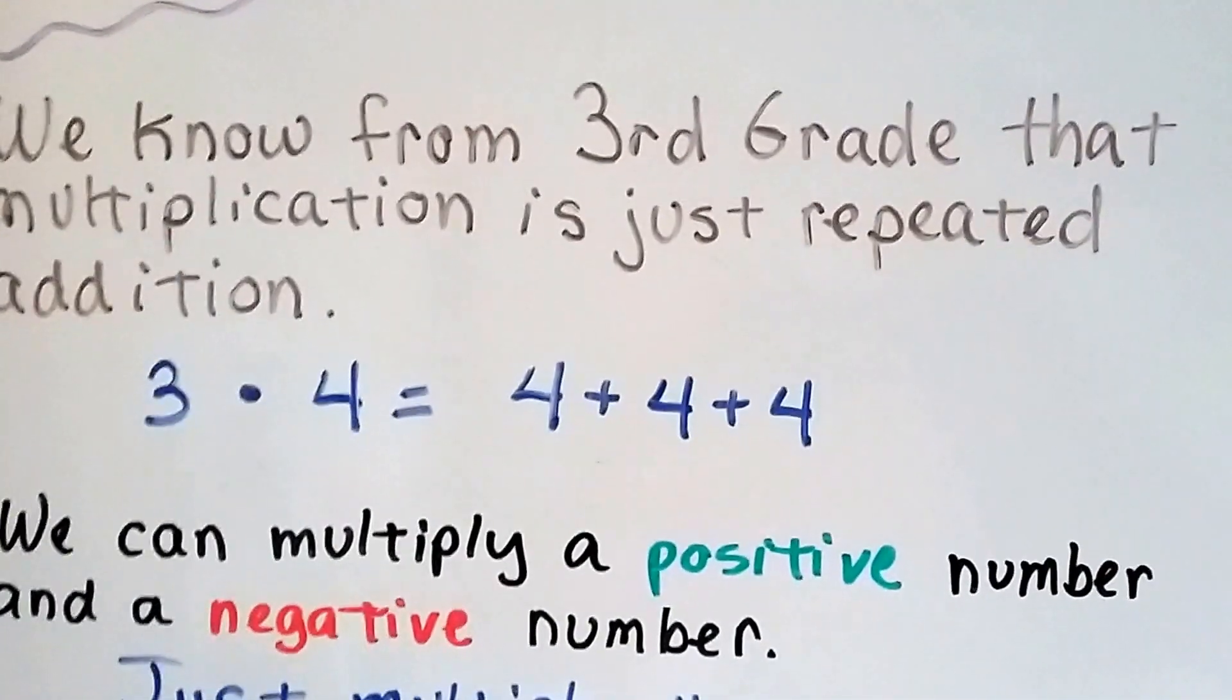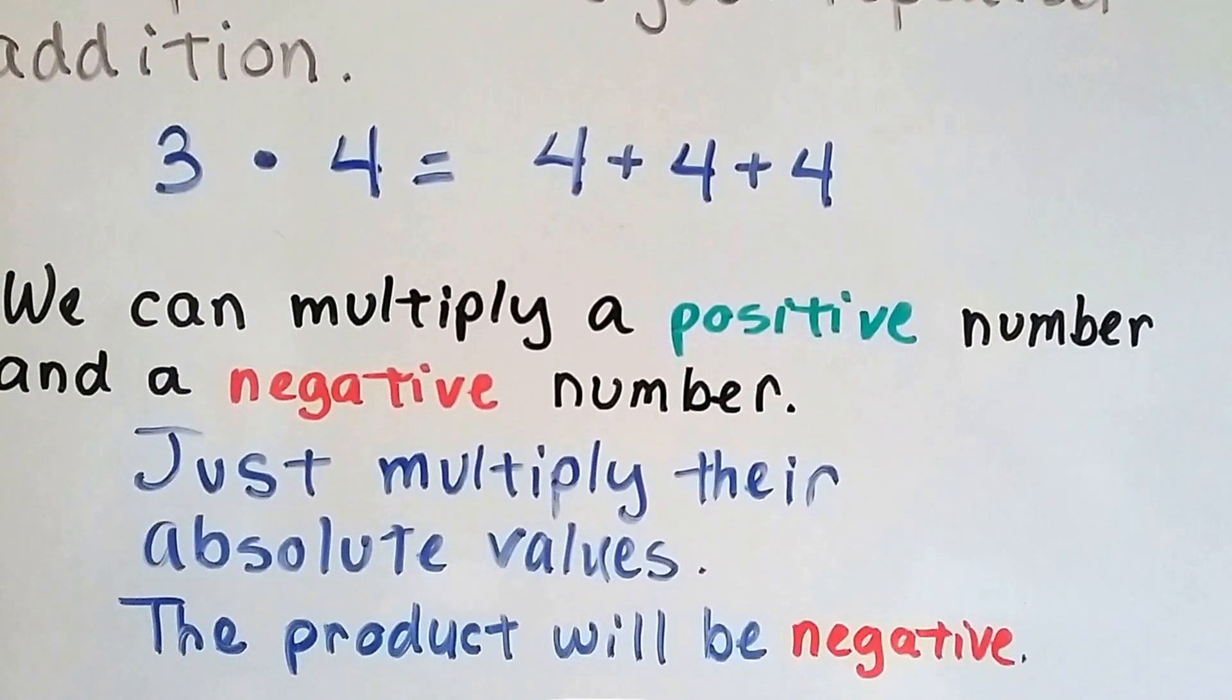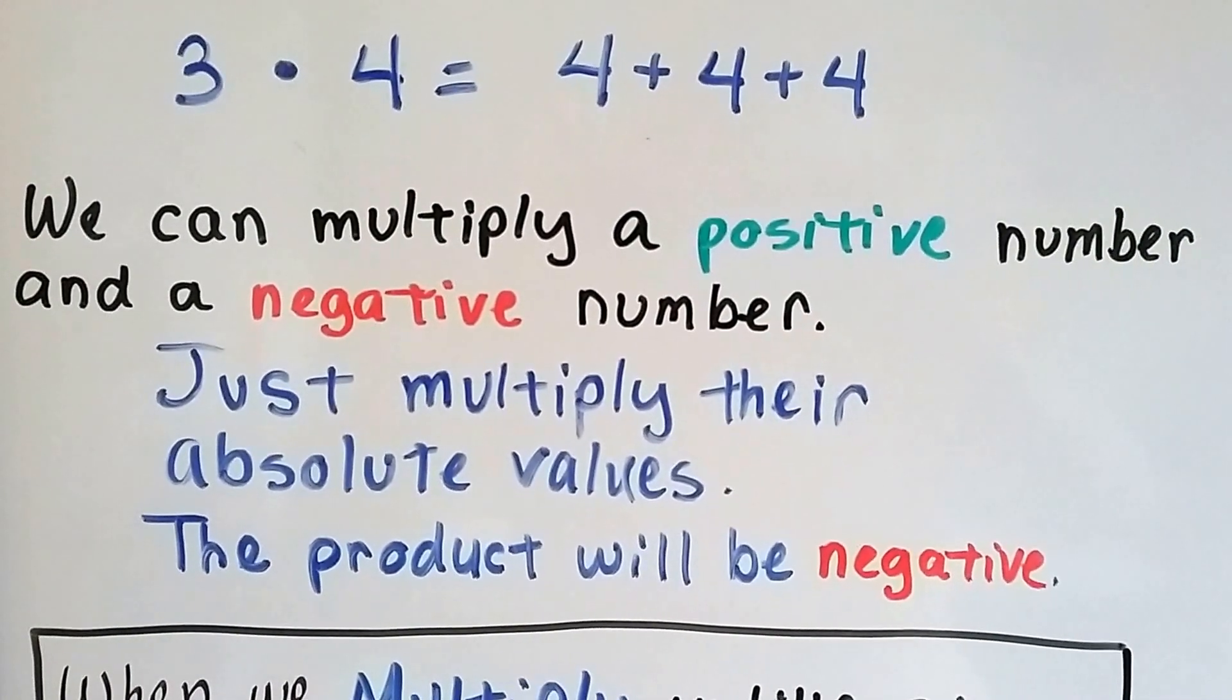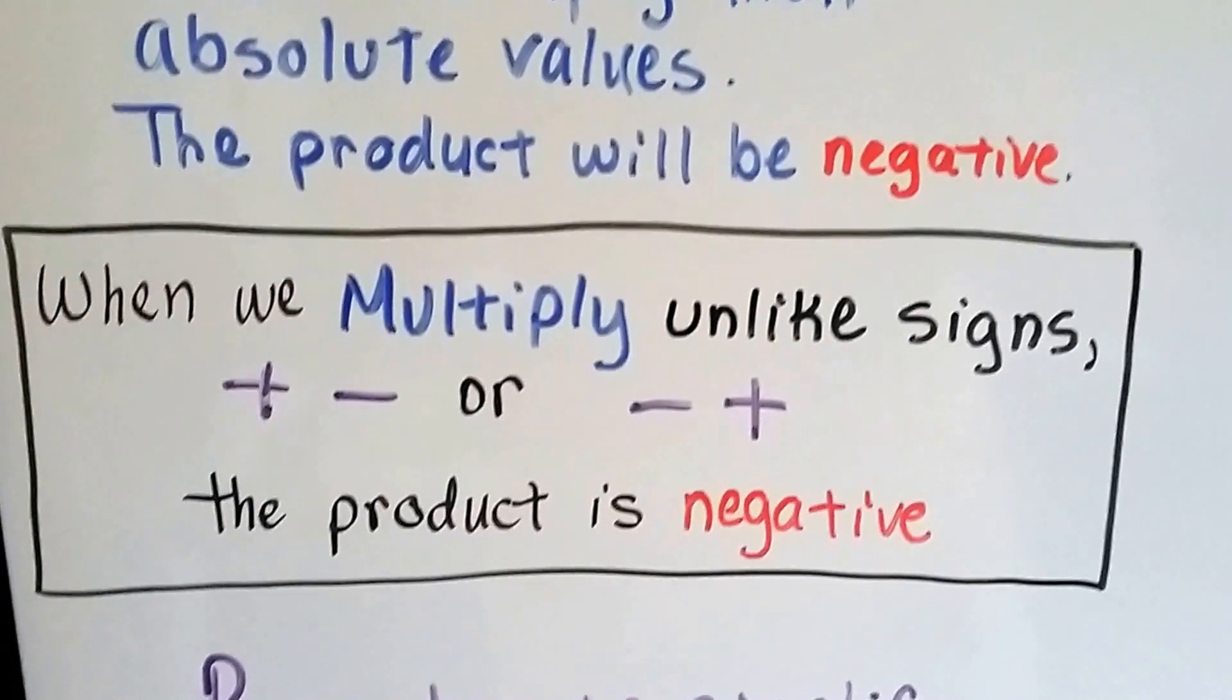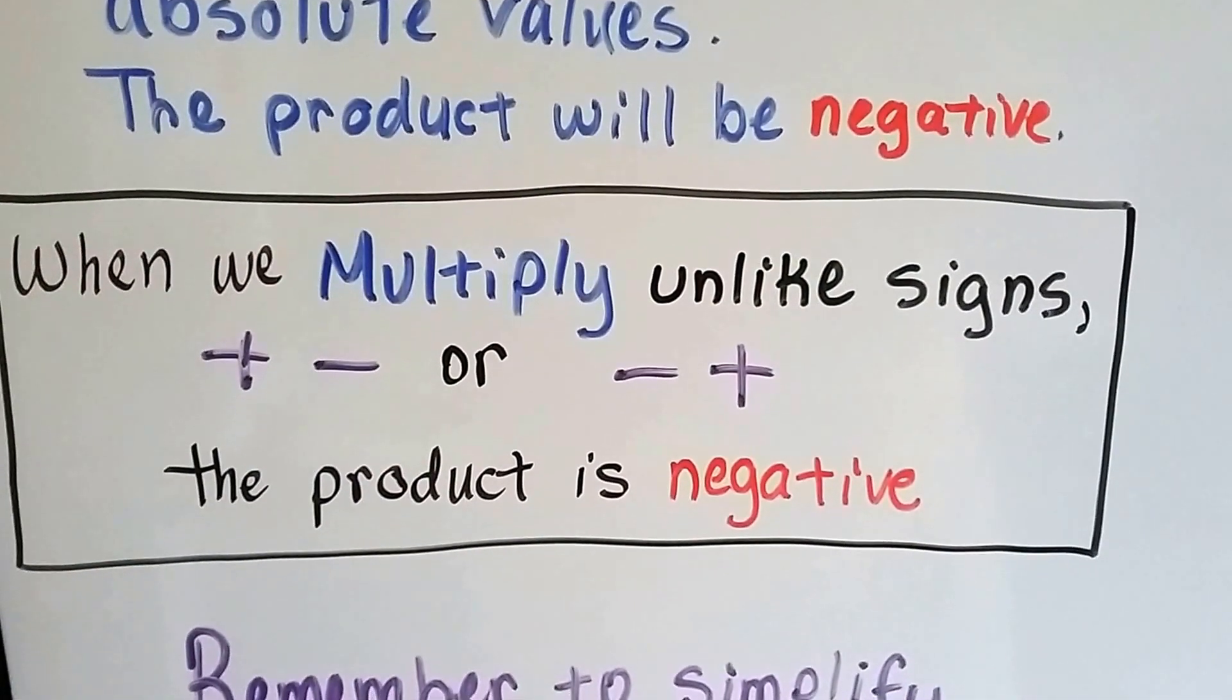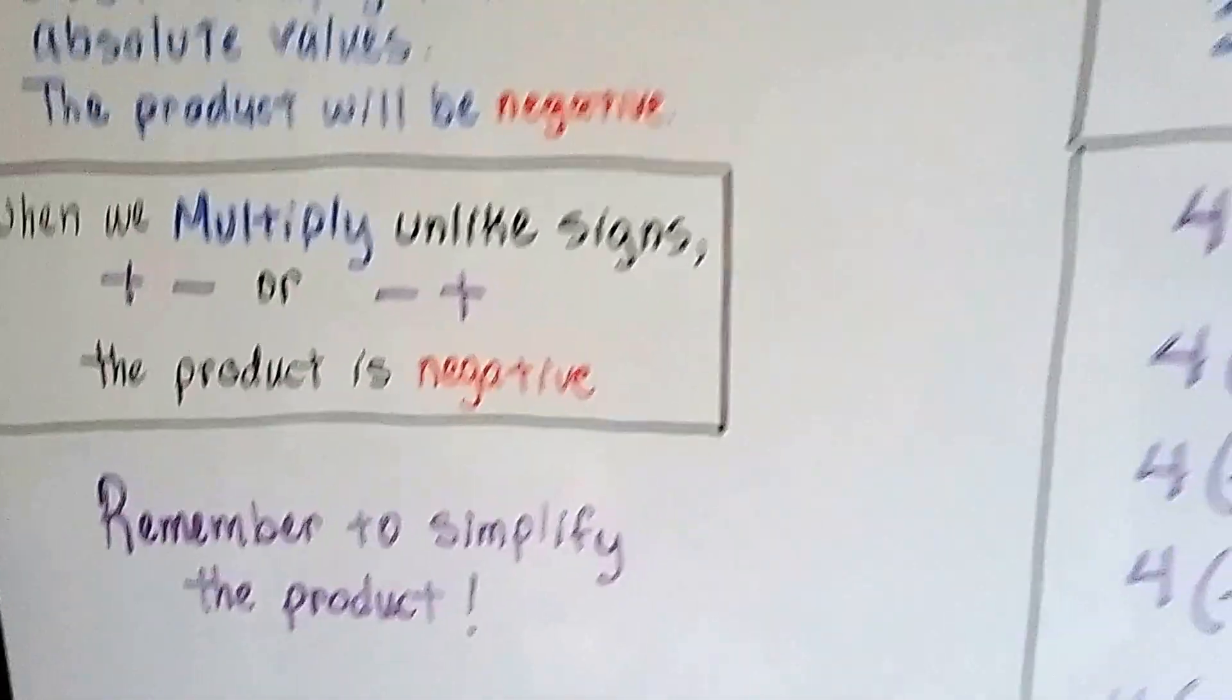We know from third grade that multiplication is just repeated addition. 3 times 4 is 4 plus 4. We can multiply a positive and a negative number, and we're going to get a negative product. We just multiply their absolute values and the product will be negative. When we multiply unlike signs, positive to a negative or negative to a positive, it doesn't matter which one's first and which one's second, the product is going to be negative. Just remember to simplify the product, like if we have fractions or something.